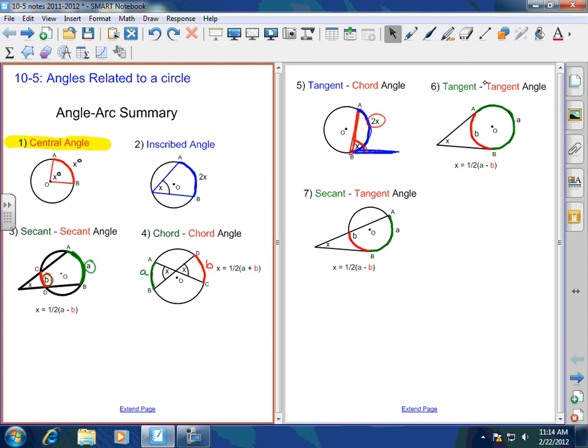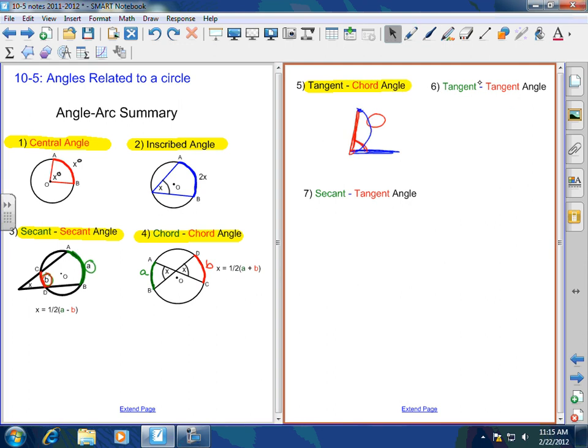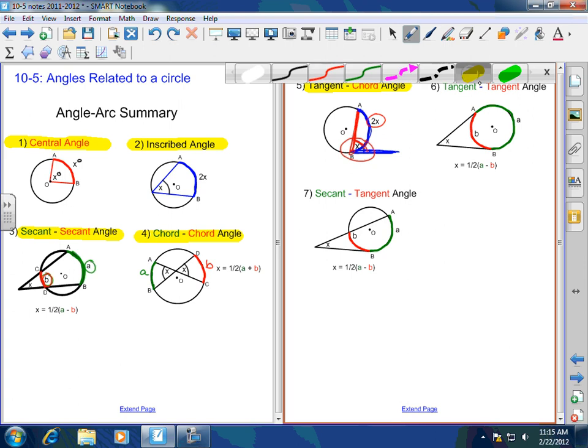Inscribed angle, you have that the angle is half of the arc measure. Secant-secant angle, one-half of A minus B. Chord-chord angle, one-half of A plus B. Tangent-chord equals one-half of the arc. For tangent-tangent angle, it's one-half of A minus B. And for secant-tangent angle, it's one-half of A minus B.